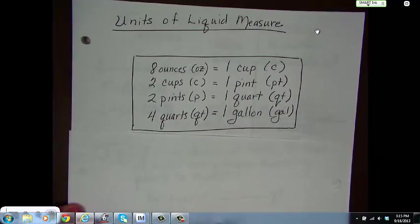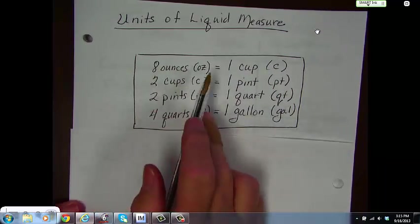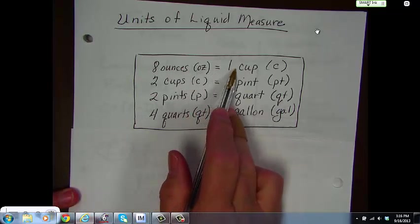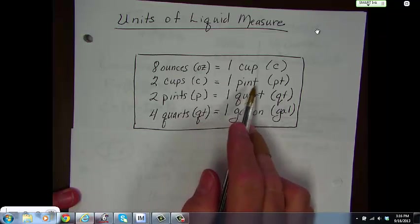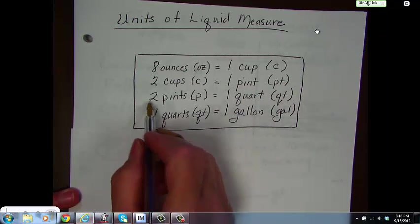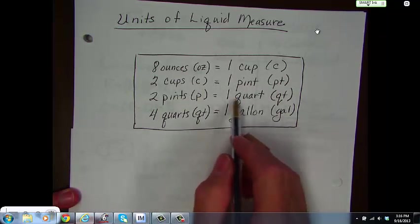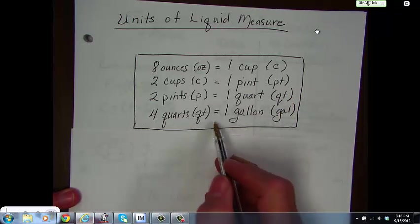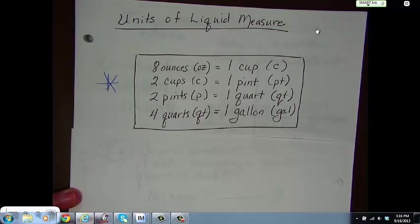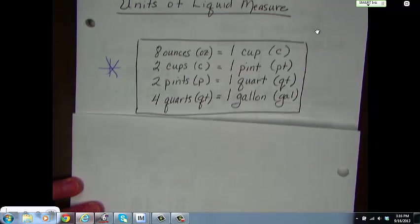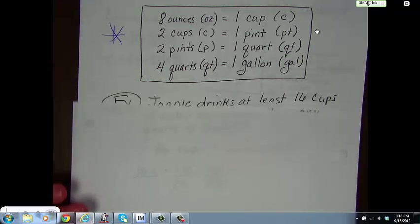Okay, liquid measure. In the United States, liquid measure looks like this. We have 8 ounces equals 1 cup. 2 cups equals 1 pint. 2 pints equals 1 quart. And, 4 quarts equals 1 gallon. This is important stuff. You've got to have these in your notes. That way, when you go to do the assignment, you can go back to them and you don't have to ask a whole bunch of questions.